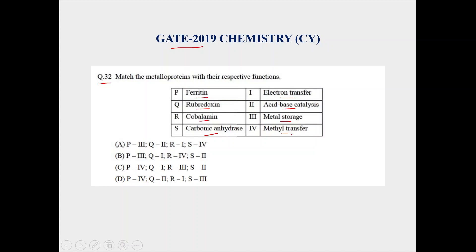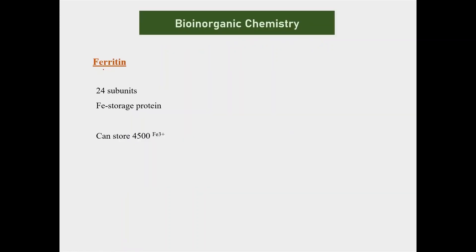So let's first look into ferritin. Ferritin is a metal storage protein. It stores iron. Ferritin is the largest iron storage protein in human body.